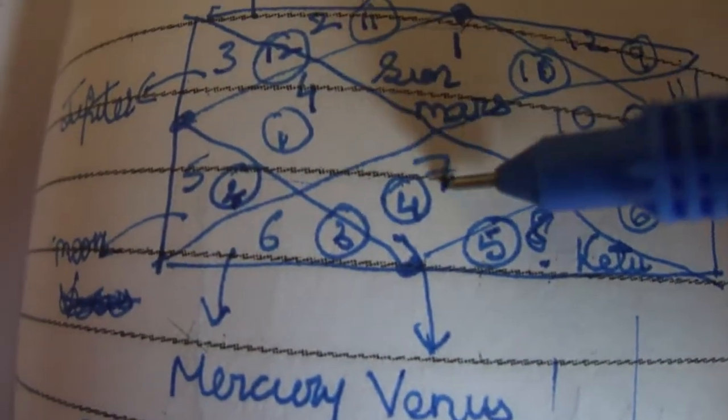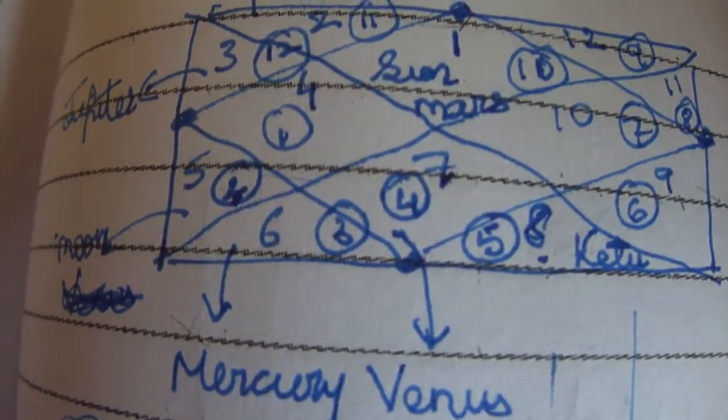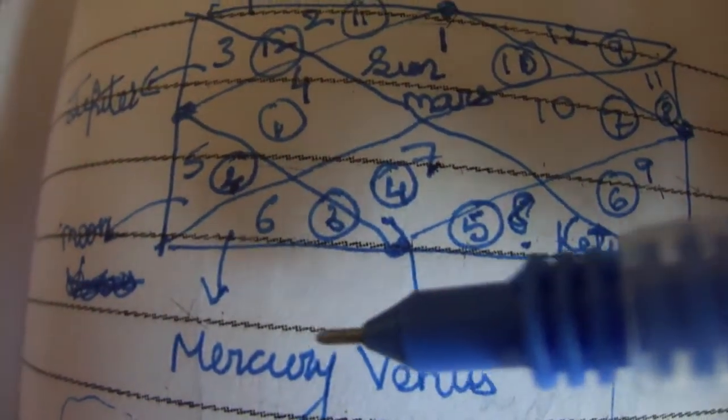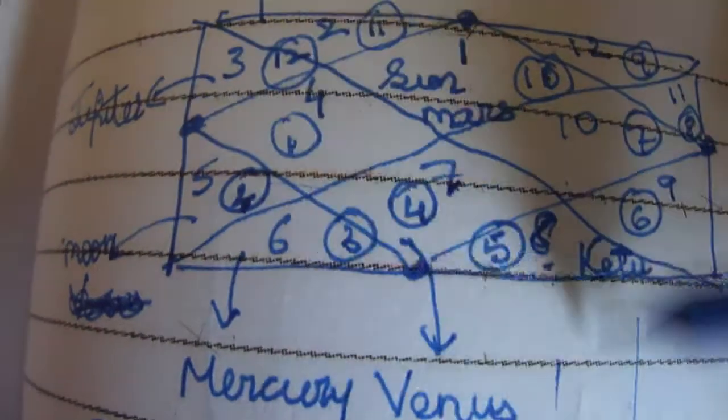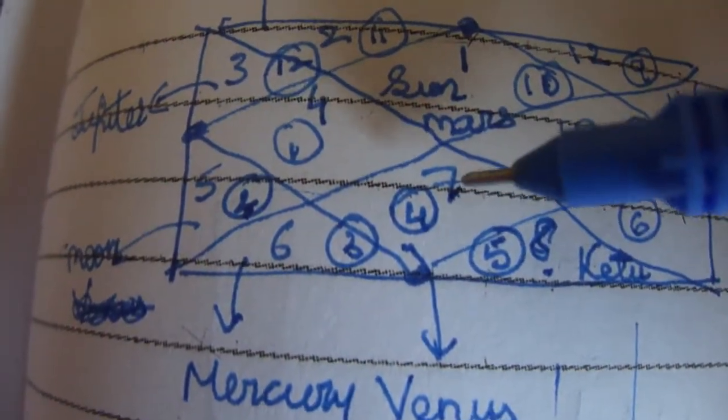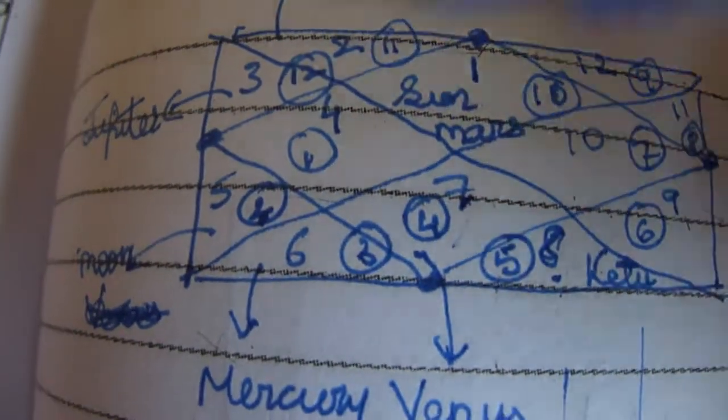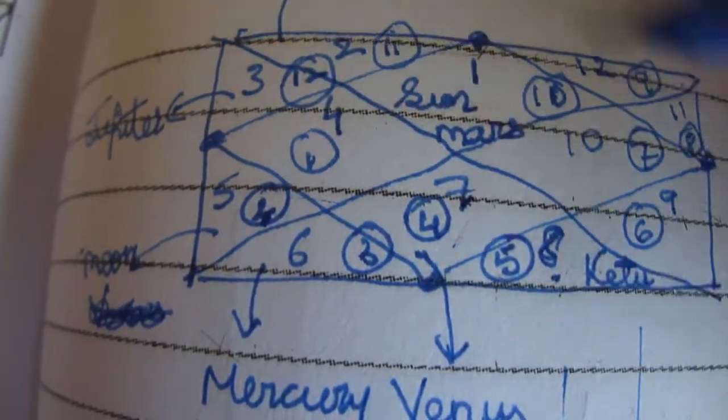Also, Venus is present in its seventh house which is again a very good placement. Mercury is also very well placed. Again from the presence of Venus we can say—Venus is present in the sign of Cancer—the person will have a very emotional and caring spouse.